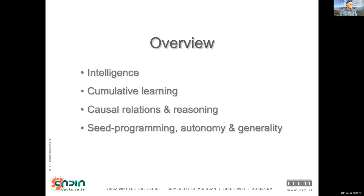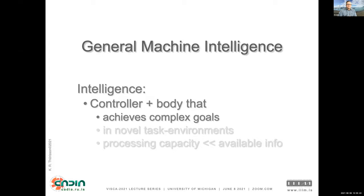I need to talk about intelligence because the particular take on intelligence that we follow — myself, my team, and a small group of collaborators — really has a big influence on our methodology. Then I'll talk about cumulative learning, causal relations and reasoning, and lastly autonomy, generality, and seed programming. So: general machine intelligence.